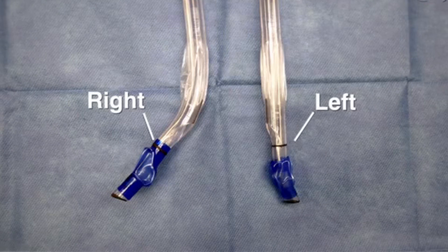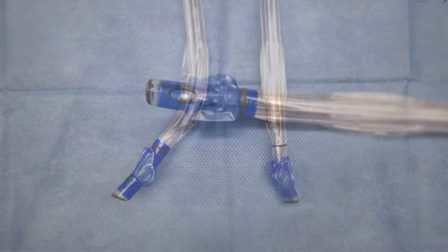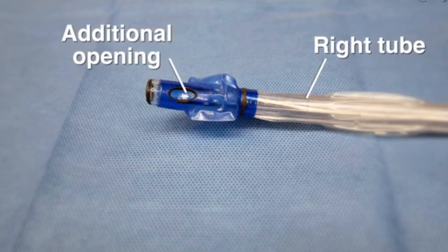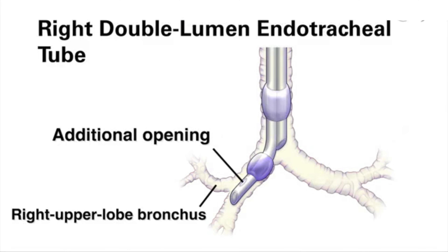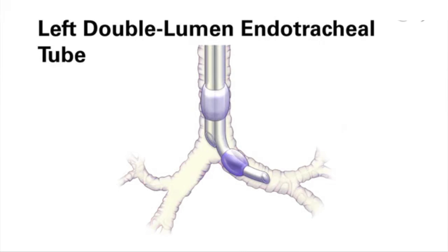Double lumen endotracheal tubes placed on the right side have a different design from tubes placed on the left side. Right-sided tubes have an additional opening to allow for ventilation of the right upper lobe. Consequently, placement of a right-sided tube involves alignment of the additional opening and may require more expertise or troubleshooting than placement of a left-sided tube.